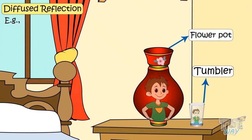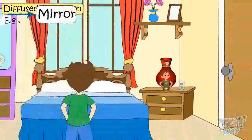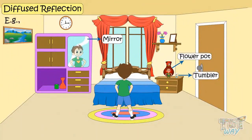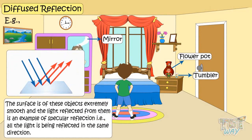Why? Because these three things — this pot, this tumbler, and this mirror — have extremely smooth surfaces, and the light reflected from them is an example of specular reflection. That is, all the light is being reflected in the same direction.